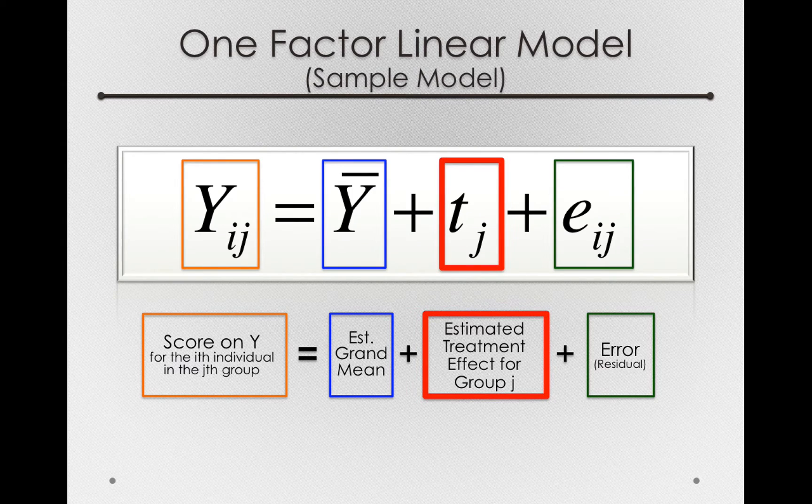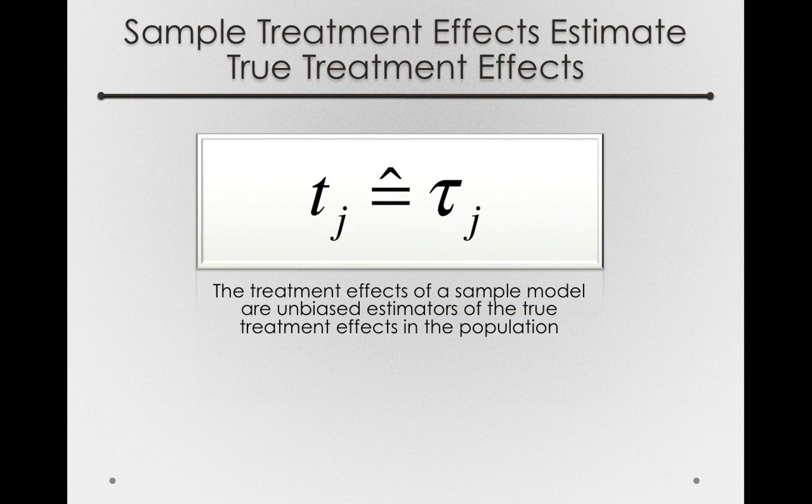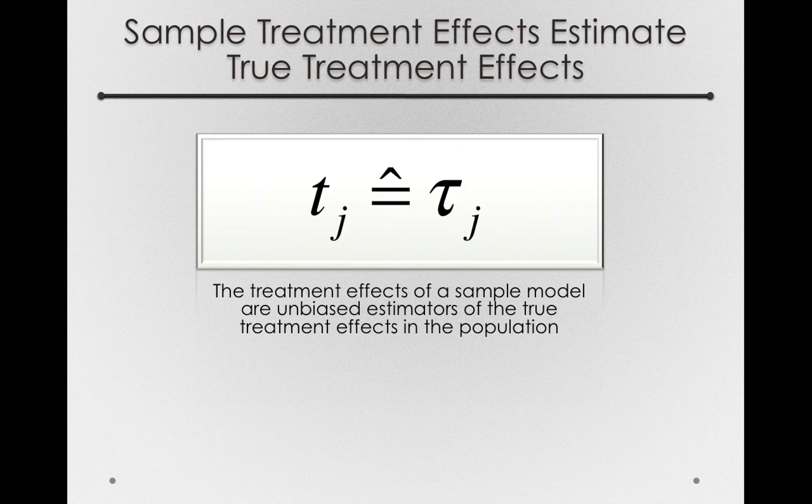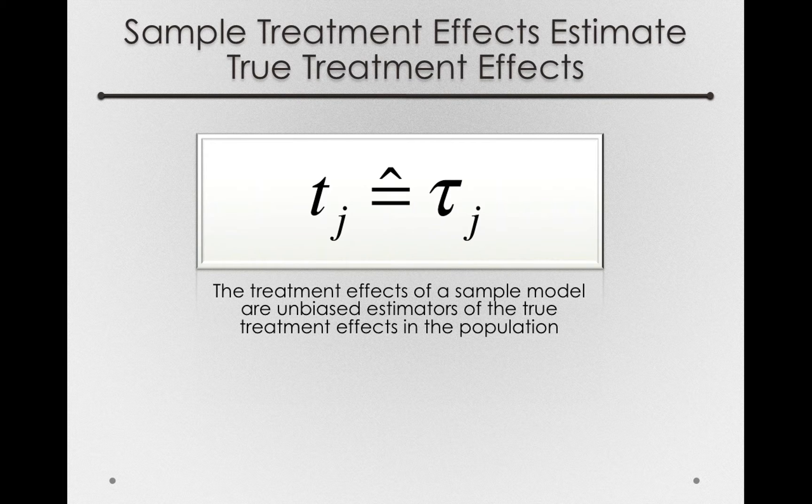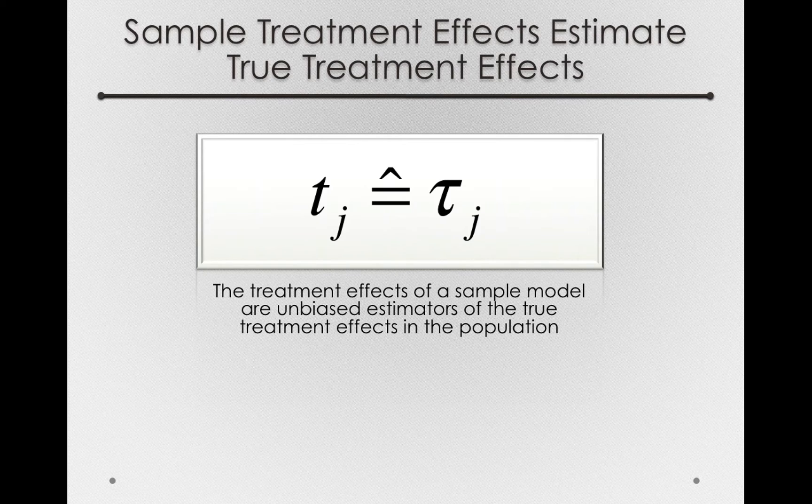So those T sub J's, those treatment offsets that we form in our sample model, are the best guess we have of the true treatment offsets, the true tau sub J's. And those T sub J's, just like a sample mean, are an unbiased estimator of the true treatment effects in the population.